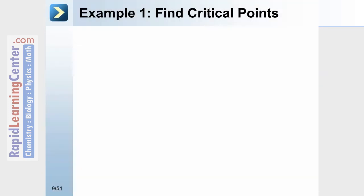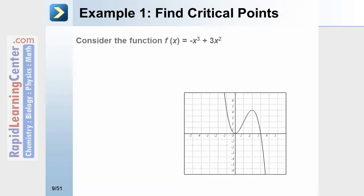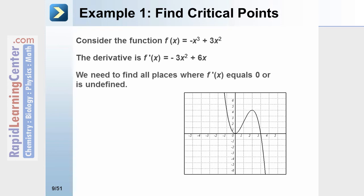Let's use an example to find critical points. Consider the function f(x) = −x³ + 3x², shown graphed below. The derivative for this function would be −3x² + 6x. We need to find all the places where the derivative equals 0 or is undefined. Since the derivative is a polynomial, it is never undefined.